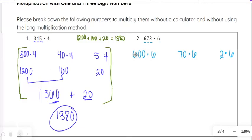So 600 times 6, I would start with 6 times 6, which is 36. And then we've got two zeros because it is 600 times 6. 70 times 6, 7 times 6 is 42. So that would be 420 there. And then we've got 2 times 6, which is 12. And then we just add these together.